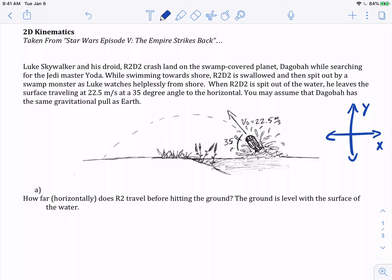We have Luke Skywalker and his droid R2-D2 crash land on the swamp-covered planet Dagobah while searching for the Jedi Master Yoda. R2-D2 is swallowed and then spit out by a swamp monster as Luke watches helplessly from shore. We've highlighted all the information we need to get started, and we have a nice picture here giving us that same information in a visual form.